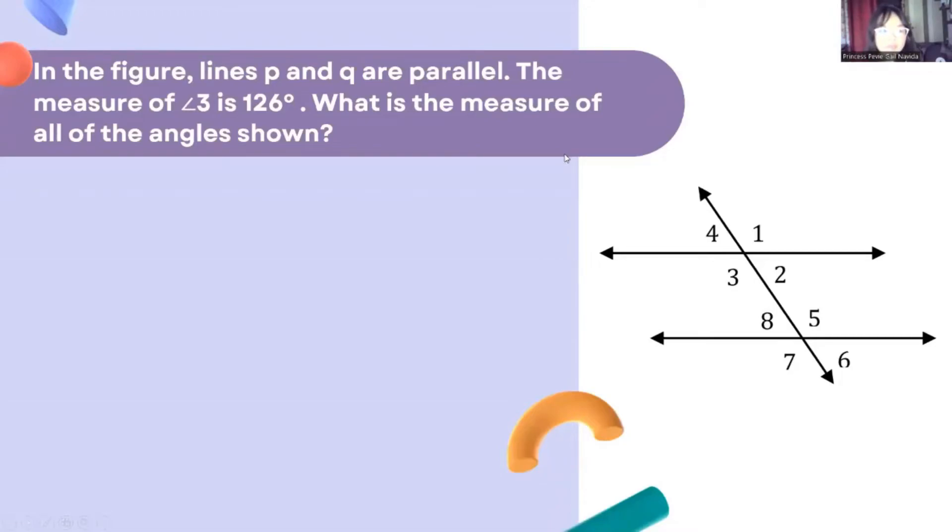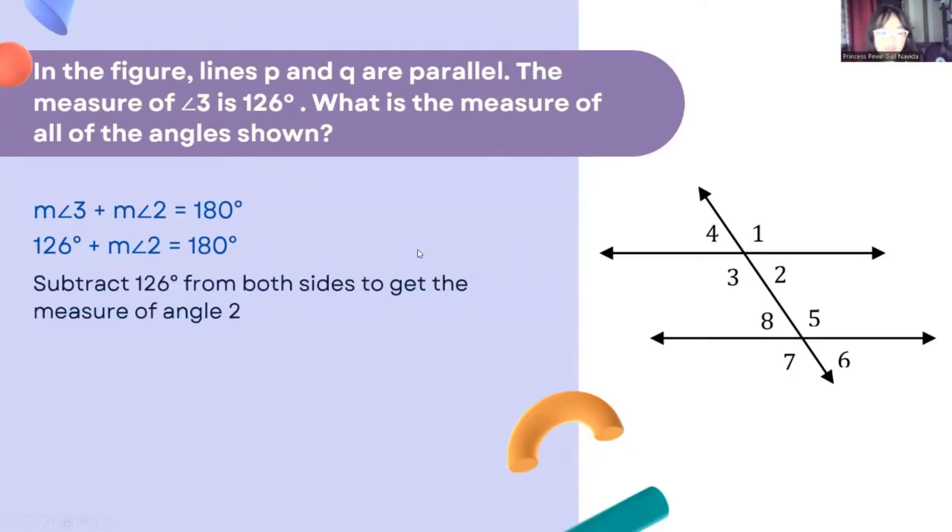For the given problem, in the figure, lines p and q are parallel. The measure of angle 3 is 126 degrees. The number sentence will be 126 degrees plus the measure of angle 2 is equal to 180 degrees. Subtract 126 degrees from both sides to get the measure of angle 2. The measure of angle 2 will be 54 degrees.